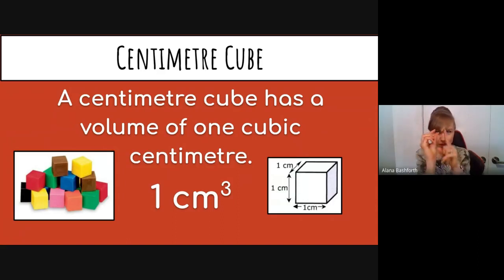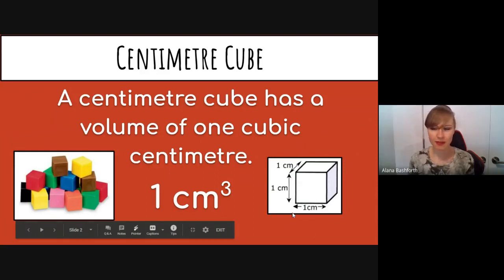If you've ever seen those little cubes that are like this big and they're colorful at school, that is a centimeter cube. It has a volume of one cubic centimeter. If you can see right here where my mouse is, it's one centimeter high, one centimeter long, and one centimeter deep. That makes it one centimeter cubed.